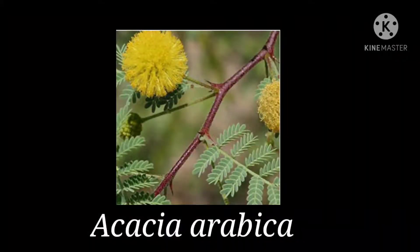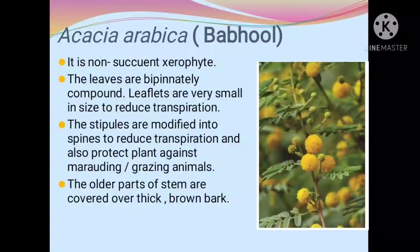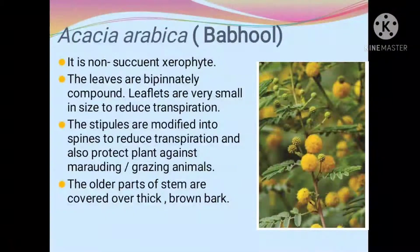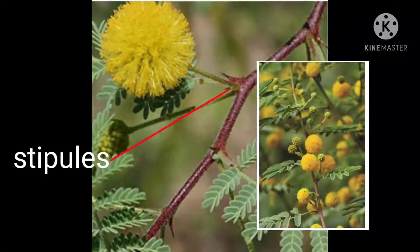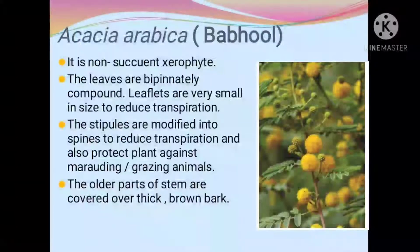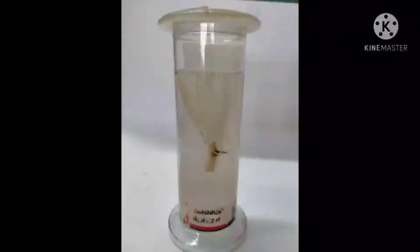The next plant is Acacia arabica, also known as the babul. It is a non-succulent xerophyte — present wherever water is available in less amount. The leaves are bipinnately compound. Leaf lets are very small in size to reduce transpiration. The stipules are modified into spines to reduce transpiration and also to protect the plant against marauding or grazing animals. The older parts of the stem are covered by a thick brown bark. This is the laboratory specimen you can see in the lab.